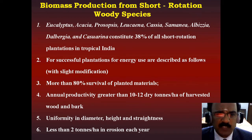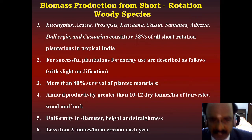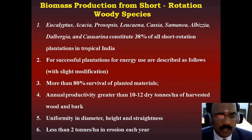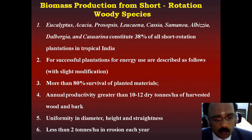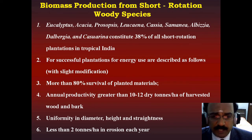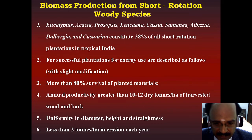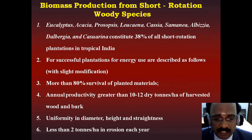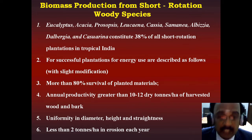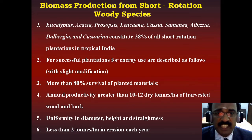These are very successful plantations, especially for energy use. These species are adaptable to any type of wasteland soil and show 80 percent survival. The minimum annual productivity is 10 to 12 dry tons per hectare of harvested wood, with uniformity in diameter, height and straightness. Less than 2 tons per hectare of soil erosion per year can be avoided through these plantations.